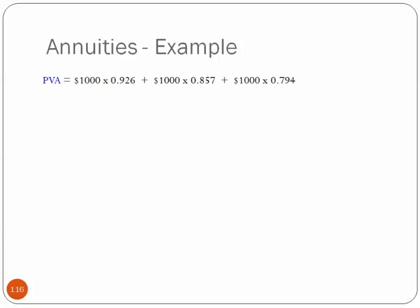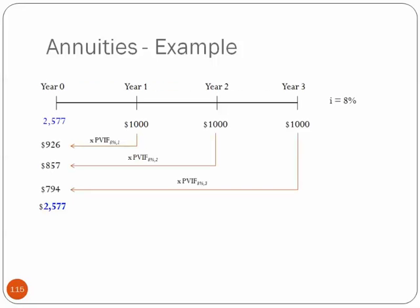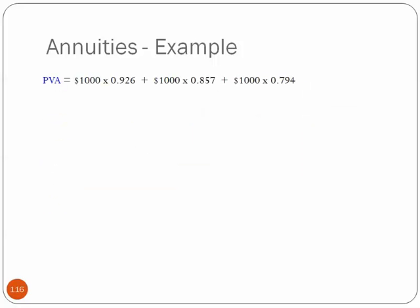Another example of what we just saw. The present value of this annuity is equal to $1,000 times, and each of these terms next to them is simply the present value interest factor associated with that payment. It's $1,000 times 0.926, 0.857, and 0.794 in these horizontal lines. And this reduces to $2,577, which is what we had seen in the previous slide.